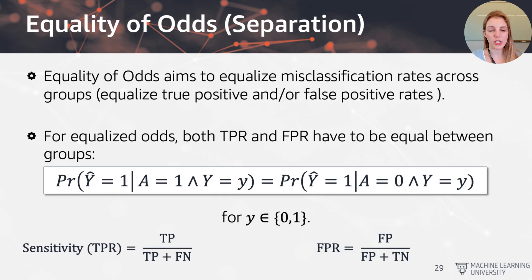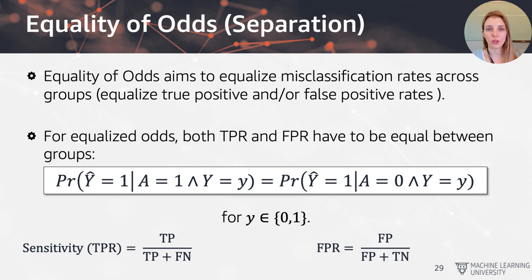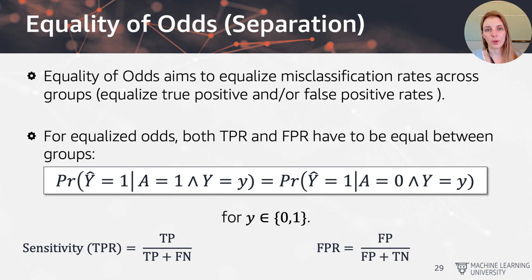Next, equality of odds falls under the separation criteria. It aims to equalize the misclassification rates across different groups — meaning we equalize the true positive rates and the false positive rates. For equalized odds, both the true positive rate and false positive rate must be equal for all groups. Using conditional probability notation: the probability of a positive predicted outcome given group membership and ground truth value should be the same regardless of group, for both y equals zero and y equals one.